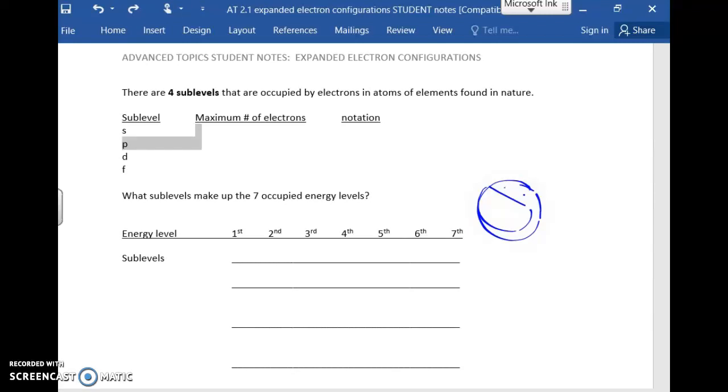Welcome to our lesson on expanded electron configurations. Let's see where we've been. In Regents Chemistry, when we talk about electron configurations, we don't use this term, but we really are using what we would call a condensed configuration.